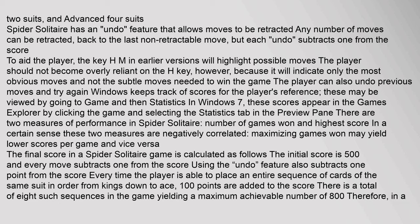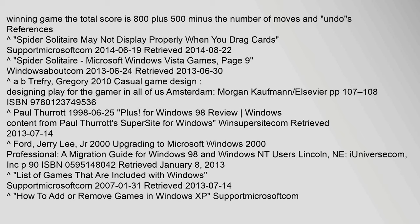In a certain sense these two measures are negatively correlated — maximizing games won may yield lower scores per game and vice versa. The final score in a Spider Solitaire game is calculated as follows: the initial score is 500, and every move subtracts 1 from the score. Using the undo feature also subtracts 1 point. Every time the player places an entire sequence of cards of the same suit in order from King down to Ace, 100 points are added. There are 8 such sequences, yielding a maximum of 800 points. In a winning game, the total score is 800 plus 500 minus the number of moves and undos.